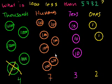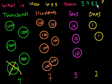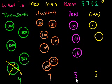And if we didn't do it using our poker chips or cans of marbles, you could just say: if you took 1,000 away from 5,732, you essentially just take 1 from the thousands place. So we took away 1 from the 5 and got 4 — so 4,732.